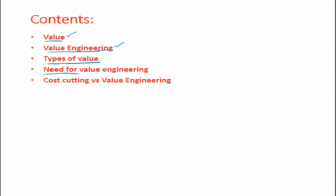Value engineering is accomplishing the necessary functions of the product. We do not work on the product itself — for instance, if I am designing a table, we do not work on the design of a table. We design on a function: something on which one has to keep belongings, something on which a computer has to be kept, something to support objects — that is a function. We will discuss value engineering with its steps, take a case study, institute green objectives into it, discuss types of value, and the need for value engineering for green products.